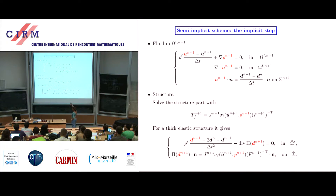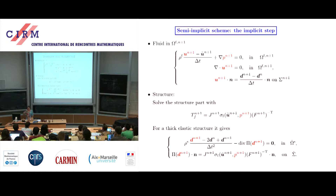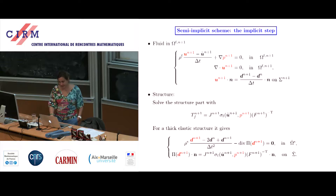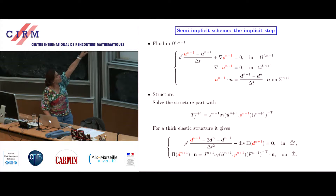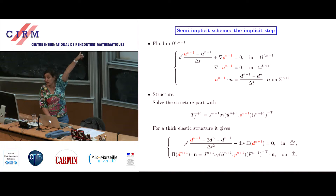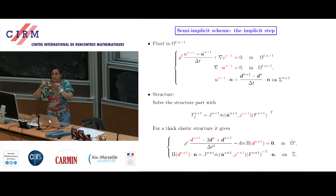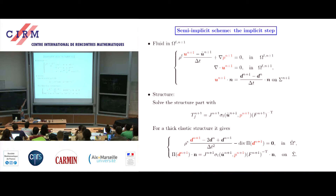The implicit coupling can be achieved thanks to sub-iterations at each time step, for instance fixed-point or fixed-point plus relaxation. The fluid and structure are solved together at the same time step via an iterative procedure. This is cheap because all nonlinearities are treated explicitly in the first step. In the projection step, you solve the Laplace equation on p, so you have fast solvers available.